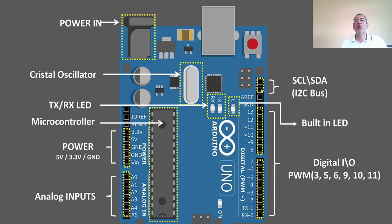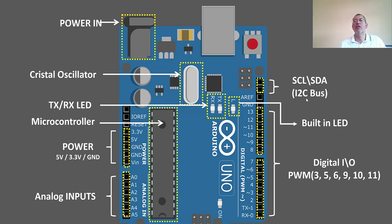The last two pins here are for the I2C bus. This is a type of serial communication. For example, if you want to control something using Bluetooth from your phone, you would use these two pins. One is for serial clock, and the other is for data. I2C and other communication protocols used with Arduino will be covered in another class.